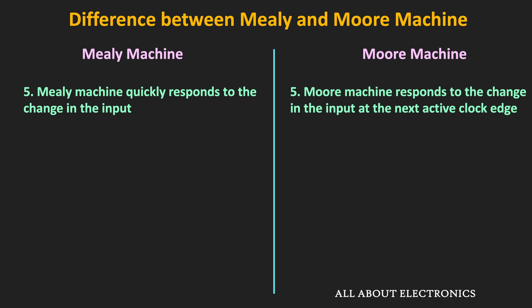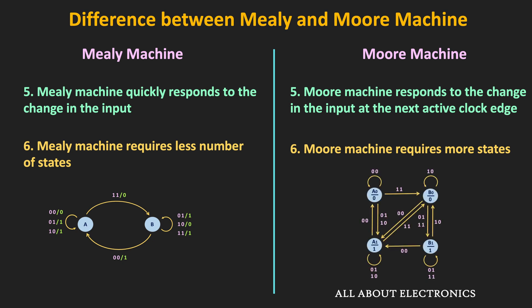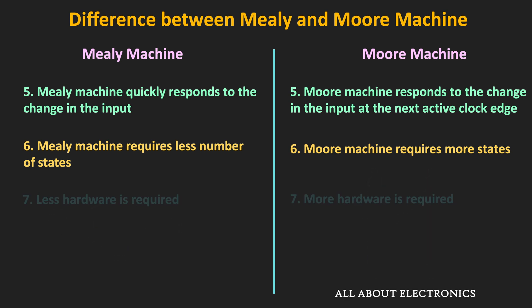From the Mealy-to-Moore and Moore-to-Mealy conversions we covered earlier, one key takeaway is that designing a Mealy machine requires fewer states compared to the Moore machine. That means the Mealy machine requires less hardware compared to the Moore machine. These are the basic differences between the Mealy machine and the Moore machine.